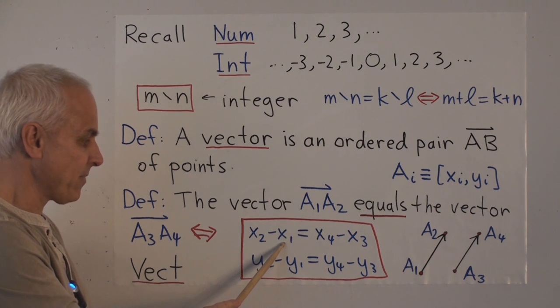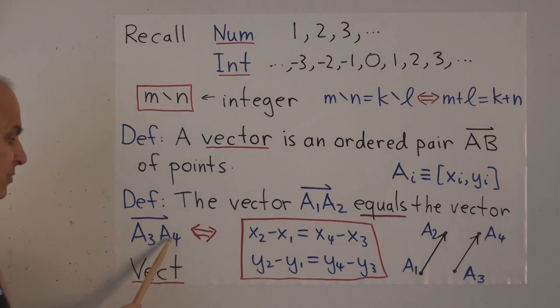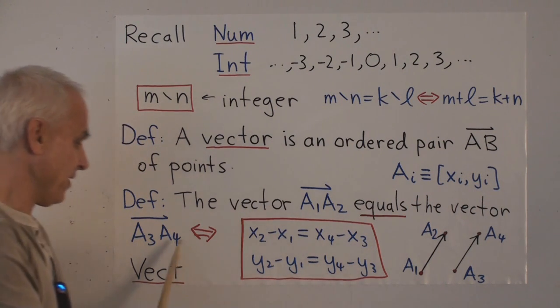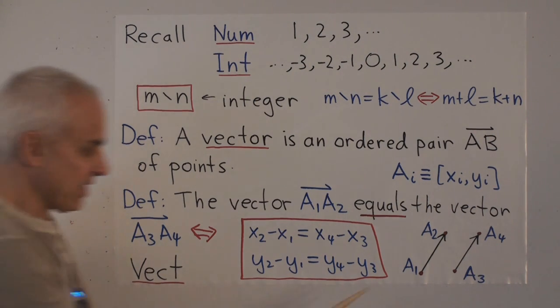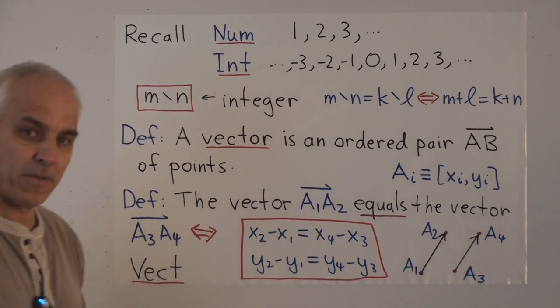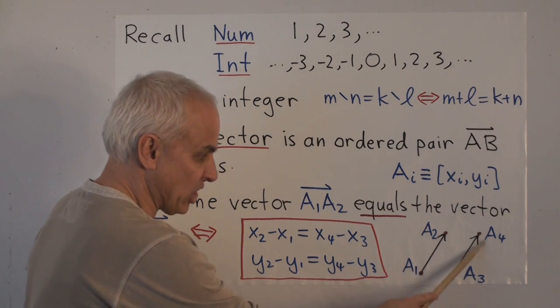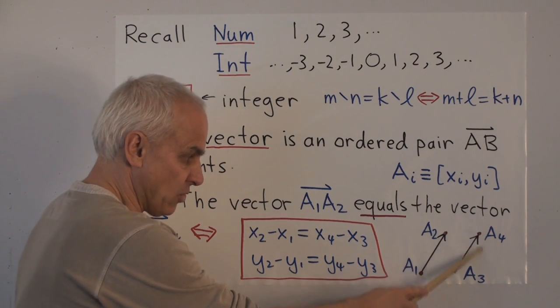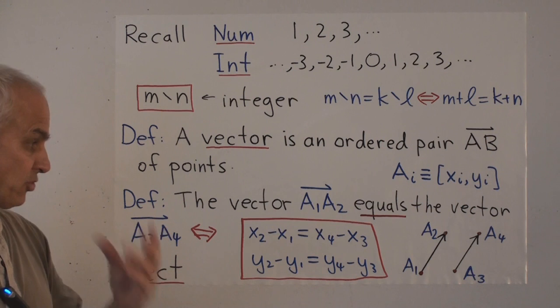When x2 minus x1, that's the difference between the x-coordinates of these two, equals x4 minus x3, the difference between the x-coordinates of these two. And when y2 minus y1, the difference between the y-coordinates here, equals y4 minus y3, the difference of the y-coordinates here. In pictorial terms, we'll say that this vector a1, a2 is equal to a3, a4, when the change in x from x2 to x1 here is the same as the change in x from here, a4 to a3. And when the change in y from here to here is the same as the change in y from here to here. That ensures that it's the relationship between these two points that defines or captures the vector.